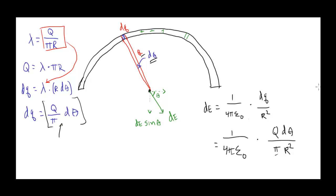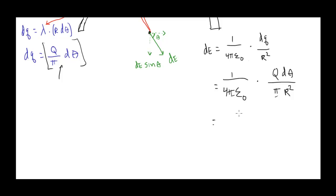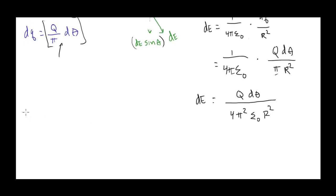I have a π from 4πε₀ and a π from the denominator, giving π squared. So simplifying: dE equals Q dθ over 4π²ε₀R². But remember, by symmetry we're not interested in dE — we're interested in dE sinθ. So dE sinθ equals Q dθ over 4π²ε₀R² times sinθ.